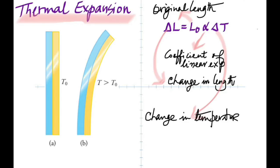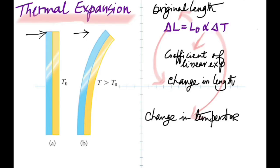The two metals have different alphas, so they expand differently. At room temperature the strip is straight, but when heated it bends because one metal (the blue) expands more than the other. There is an electrical contact point — when heated the strip bends away and breaks the circuit, switching the current off. When it cools it returns, makes contact again, and current flows until it heats up again. That is the automatic switching that happens.